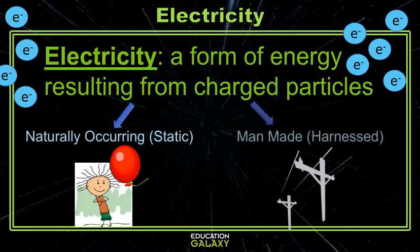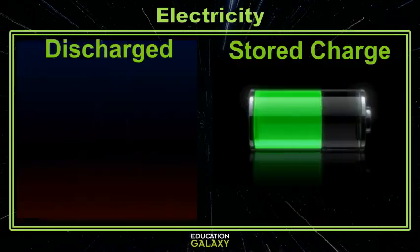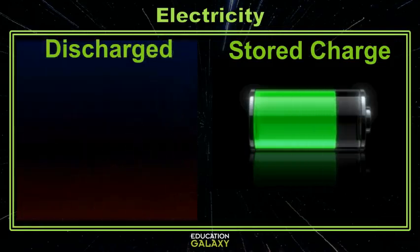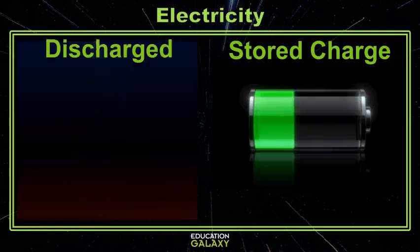Or it can be man-made and harnessed, like the electricity that powers your house. Electrons can either be released in a discharge, like shocking your friends and lightning, which are both static electricity, or it can be built up or charged and stored for later. This is where most of the man-made electricity you use comes from.